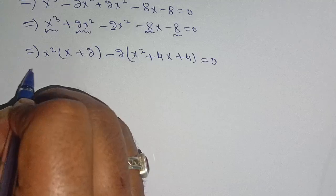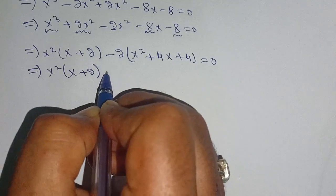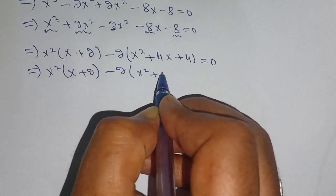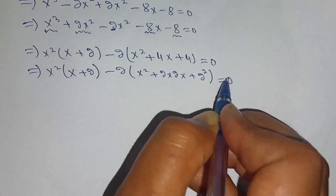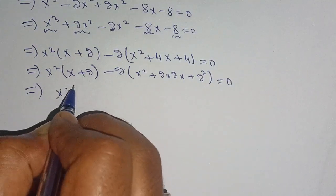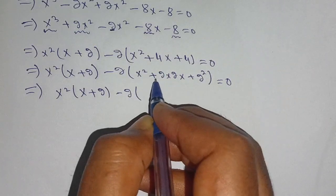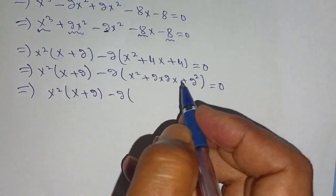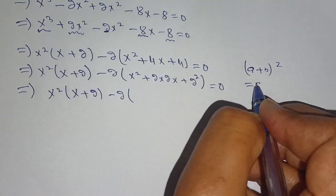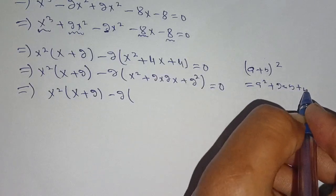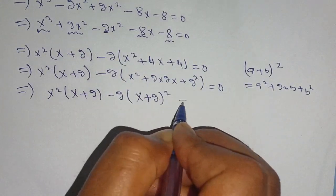Now in the next step we can write it as x squared times (x plus 2) minus 2, and the remaining part x squared plus 2 times 2 times x plus 2 squared is in the form of a squared plus 2ab plus b squared, which equals (a plus b) whole squared. Now we use this formula and we get (x plus 2) whole squared is equal to 0.